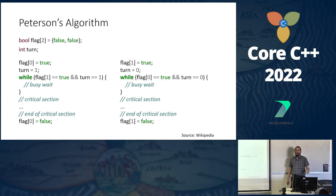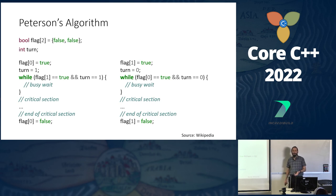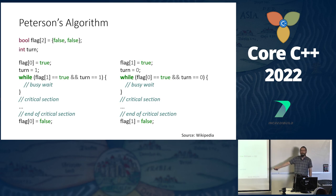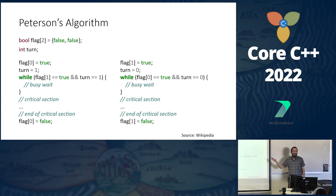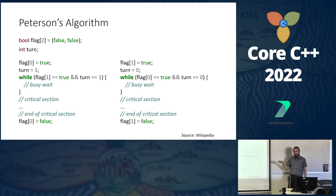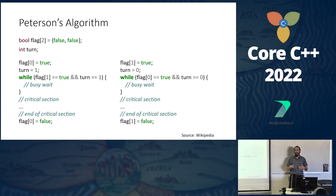If it's your turn, I wait for you to finish the critical section and lower your flag. If it's my turn, I enter the critical section and you wait in a loop. Then after I'm done you can proceed. So it works assuming sequential consistency.